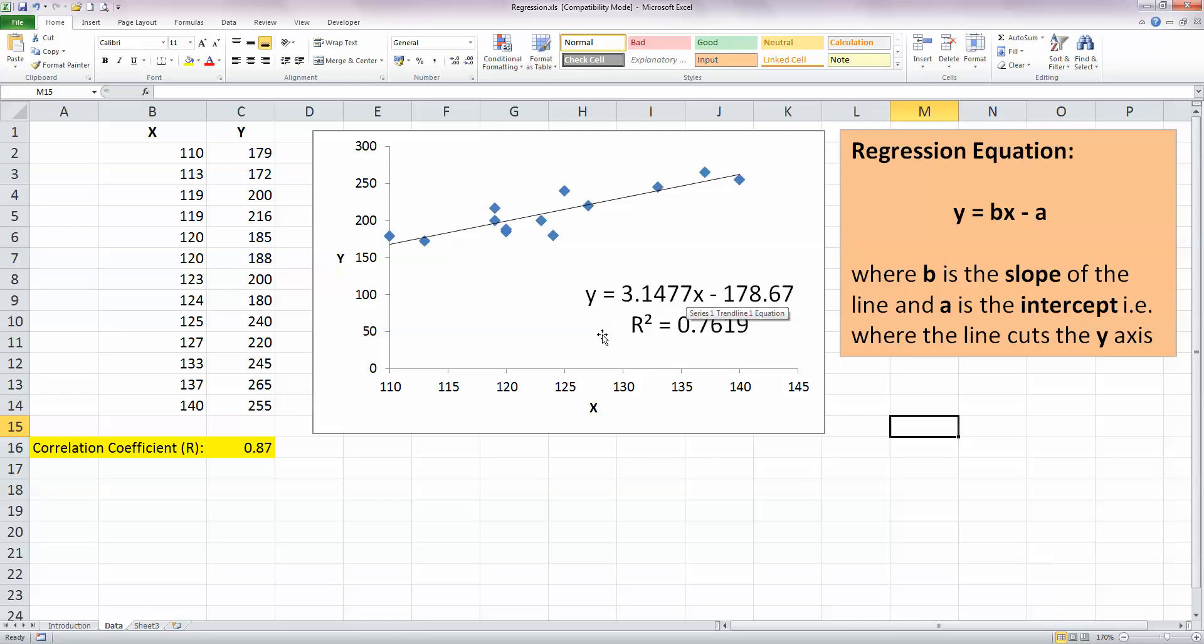Our regression equation here, y equals 3.1477 times x minus 178.67, this would allow us to make a prediction of a value of y based on a value of x. In this formula here, the 3.1477 represents the slope of the line, so we can see that our line here is increasing slowly. So this line is increasing at a rate of 3.1477, so x is increasing that much times faster than y. And the higher the value here, the steeper the slope will be. In the regression formula, the value of 178.67, well this represents a value over here on the y-axis where the line will intercept the y-axis.